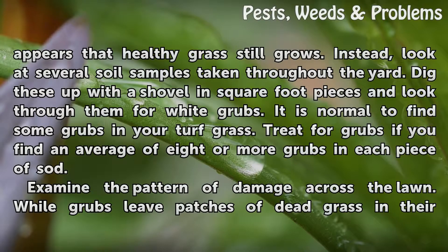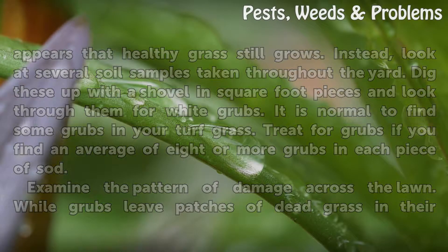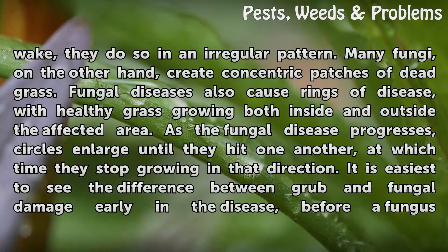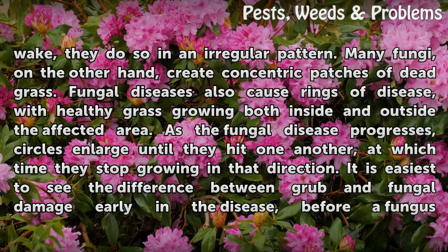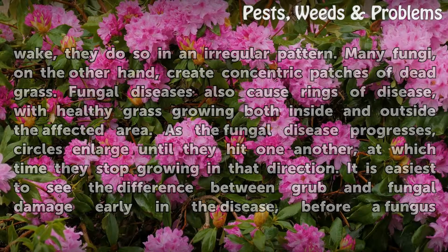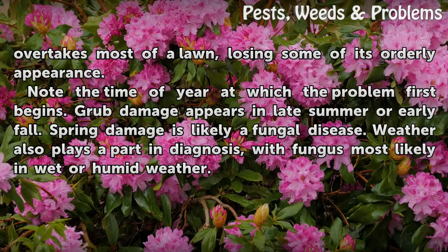Examine the pattern of damage across the lawn. While grubs leave patches of dead grass in their wake, they do so in an irregular pattern. Many fungi, on the other hand, create concentric patches of dead grass. Fungal diseases also cause rings of disease, with healthy grass growing both inside and outside the affected area. As the fungal disease progresses, circles enlarge until they hit one another, at which time they stop growing in that direction. It is easiest to see the difference between grub and fungal damage early in the disease, before a fungus overtakes most of a lawn and loses some of its orderly appearance.